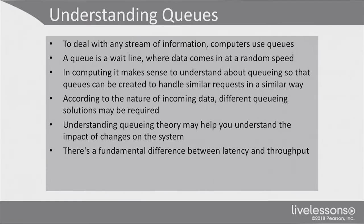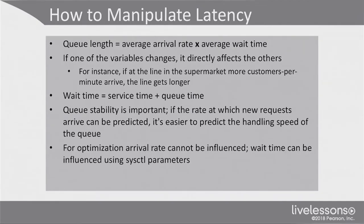Understanding queuing theory a little bit may help you understand the impact of changes on the system. First, let's talk about how to manipulate latency. In latency, the formula to apply is: QLength equals average arrival rate multiplied by the average wait time. If one of these variables changes, it directly affects the others as well. For instance, if more customers per minute arrive at a supermarket line, the line gets longer. If the average arrival rate increases, the queue gets longer.